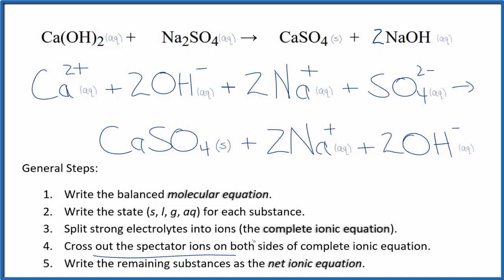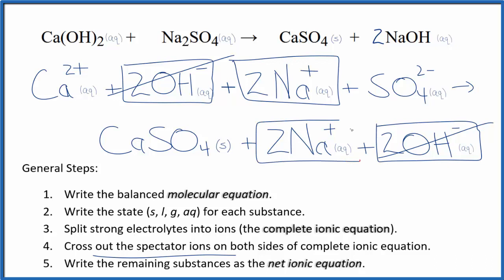Now we'll cross out spectator ions. They're on both sides of the complete ionic equation. We see in the reactants on top here we have these two hydroxide ions and again in the products. So these are spectator ions, we're going to cross those out. In the reactants we have these two sodium ions and in the products. I'm going to cross these out, spectator ions. What's left?